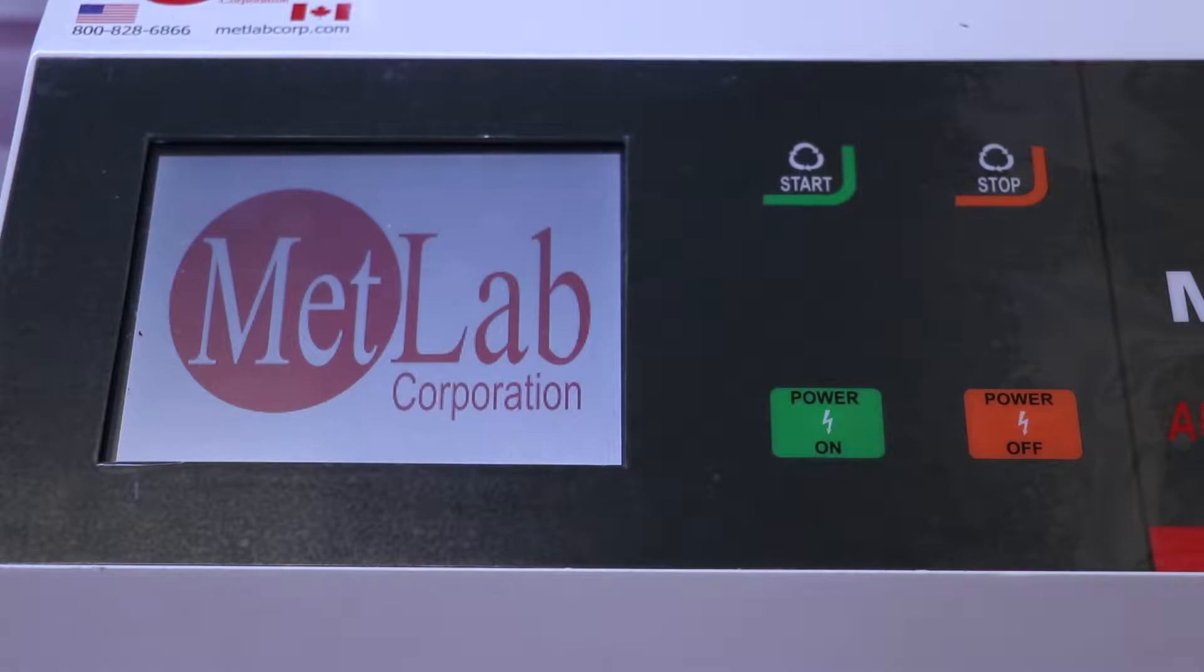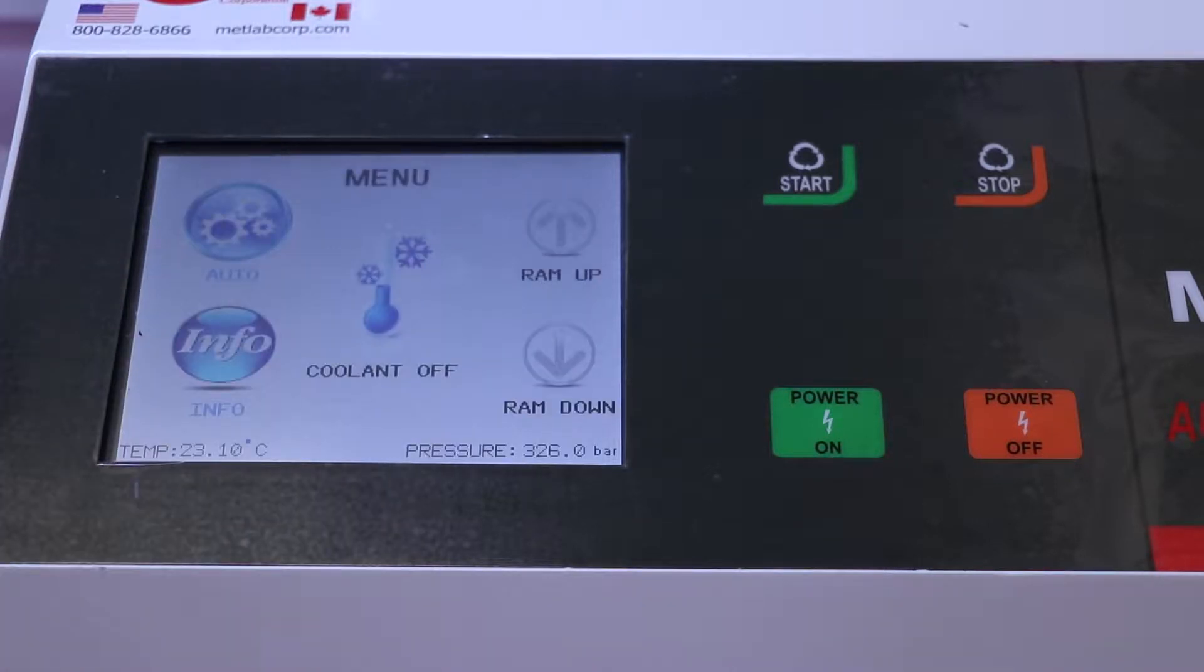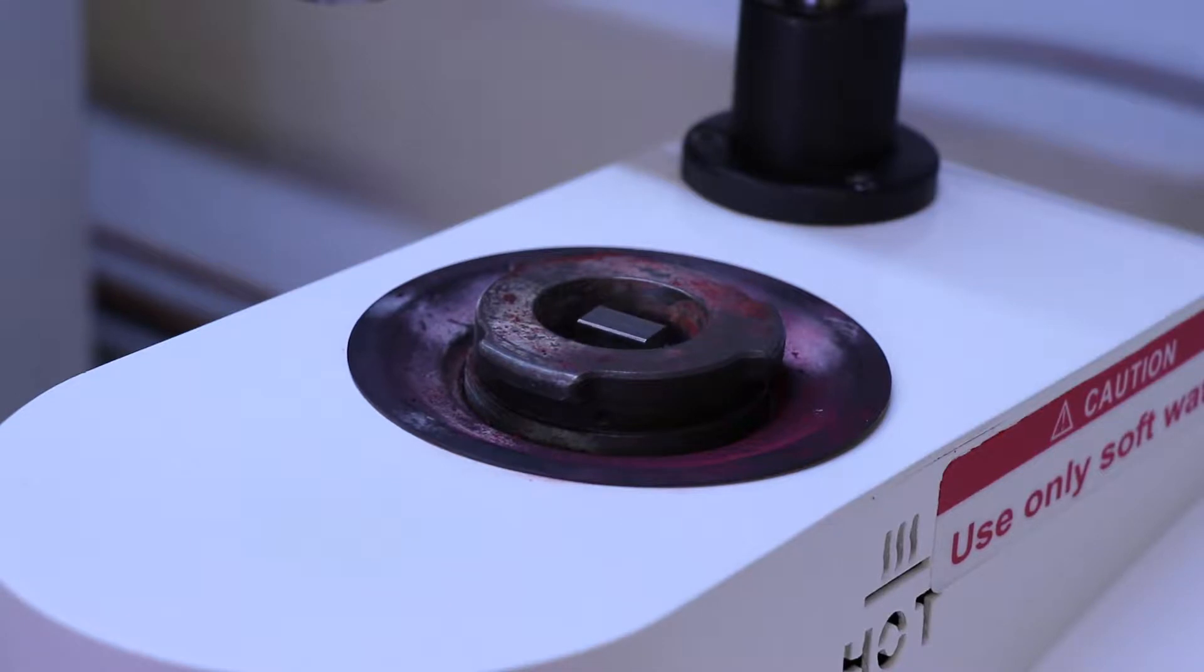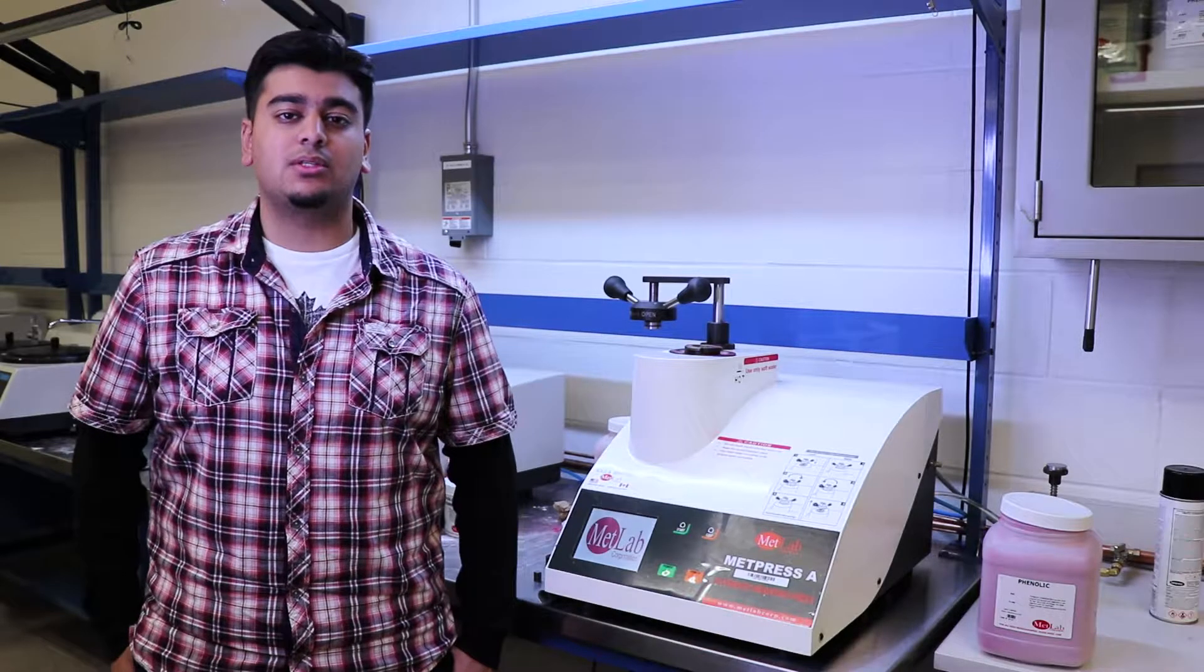Now after that, you're going to press the ram down button on the screen to bring the plate down into the machine. Now the lower you bring the plate into the machine, the safer you are at getting a better result of the shape of your puck.